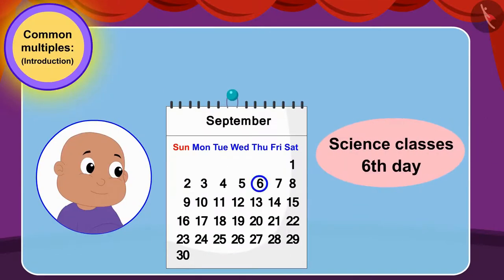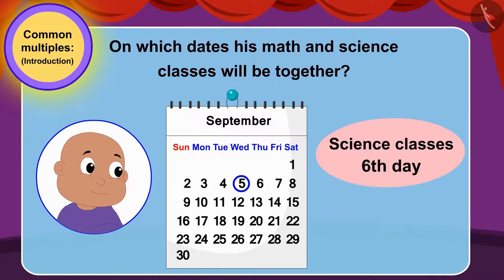Children, if Bablu's science class was every sixth day instead of every fifth, then can you tell on which dates his math and science classes will be together? You can stop the video and find the answer.